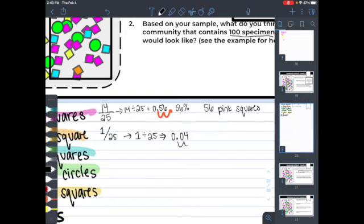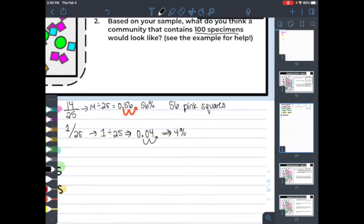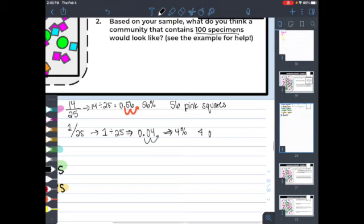Now I need to convert this into a percent. I'm going to move my decimal over twice. And that's going to give me 4%. Once again, because we're working with a population of 100, this tells me that there are going to be 4 orange squares.